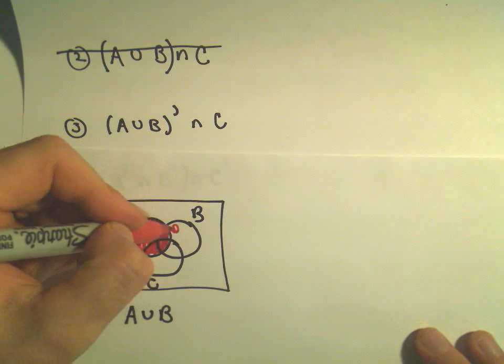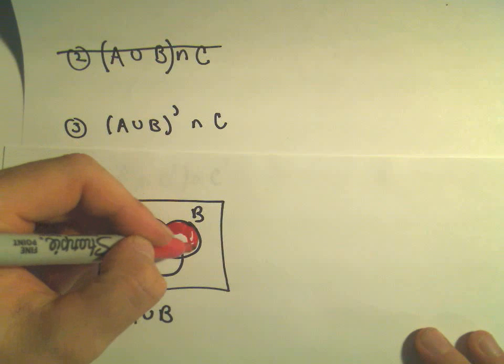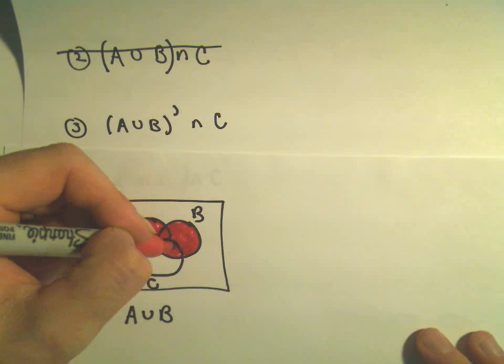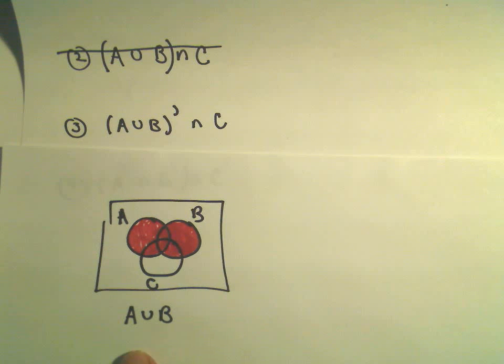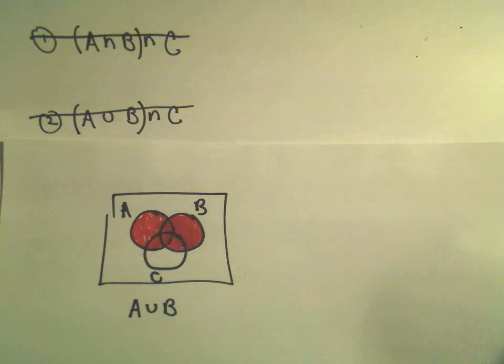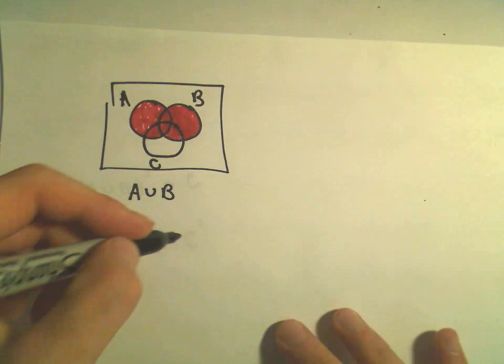And again, that's not what we're doing at the end, but we're going to kind of need this region to get the complement. Okay, so we've now shaded everything that's in A or B.